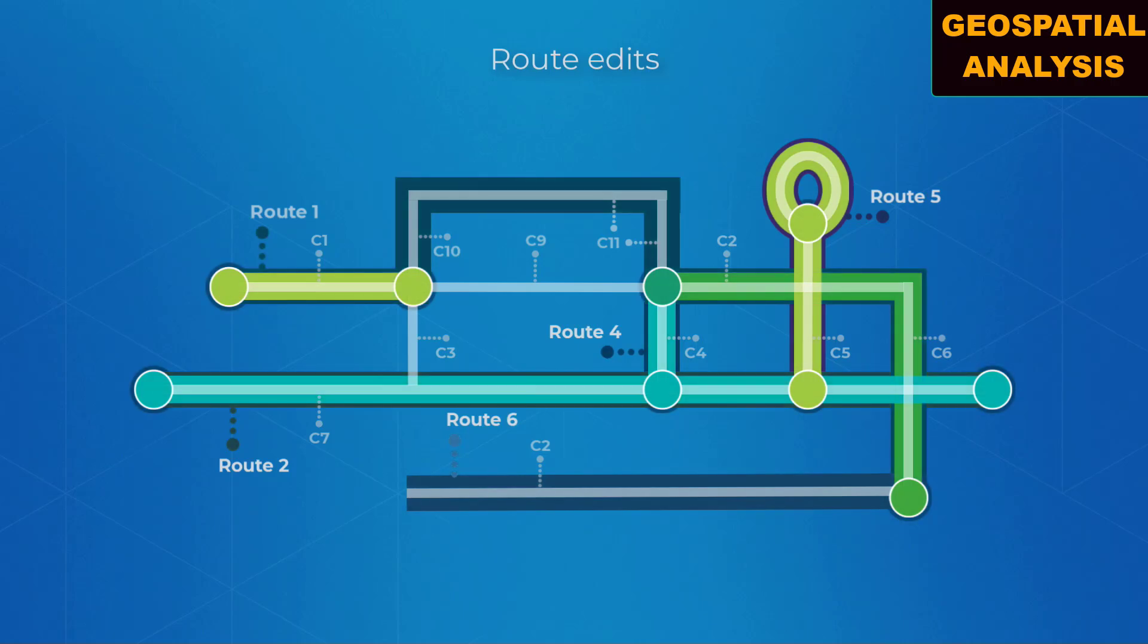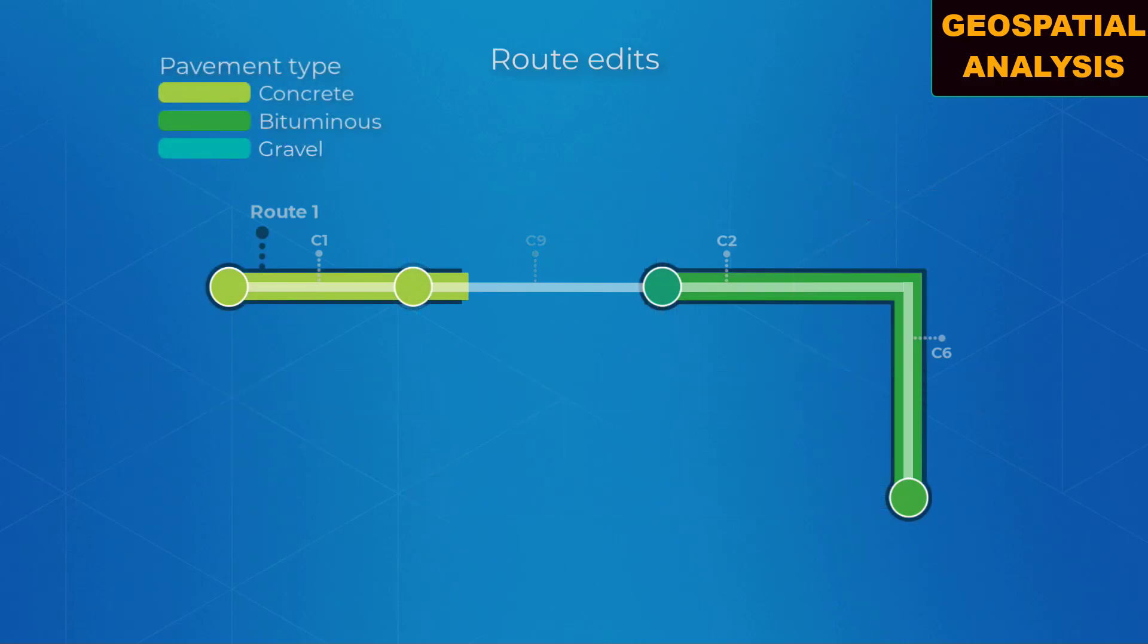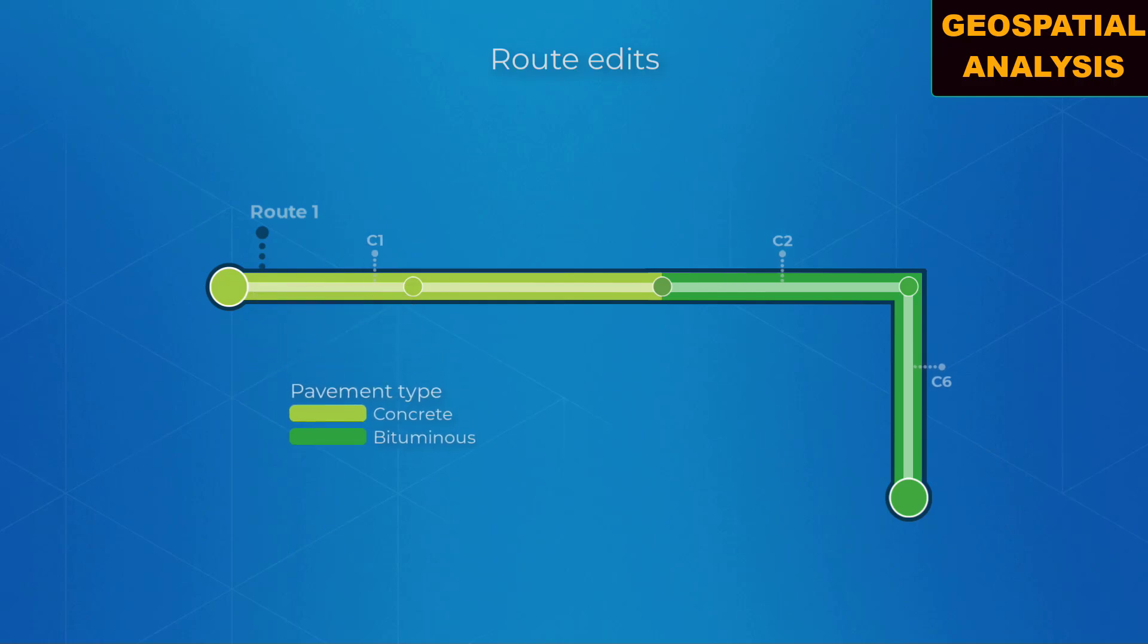Route edits have a direct impact on how events are located along a route and how they are rendered on a map. How an event reacts to these types of route edits is called event behavior.